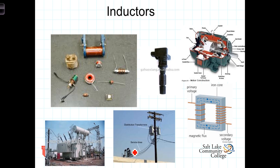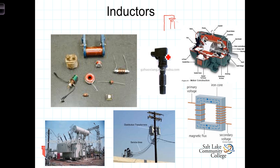You bring high voltage power into a substation, transform it down using transformers consisting of inductors to lower voltages, then transport it throughout the neighborhood. At a pole close to your house you may find transformers that drop it from the intermediate voltage down to the 240 volts that goes into your house. Another place you find inductors is on the ignition coil of a car. The spark plug creates a spark across a gap which causes the compressed gasoline to explode. The voltage to jump that spark is much higher than the 12 volts in the car's system, so we use an ignition coil to induce a very large voltage great enough to get the spark to jump across the gap.